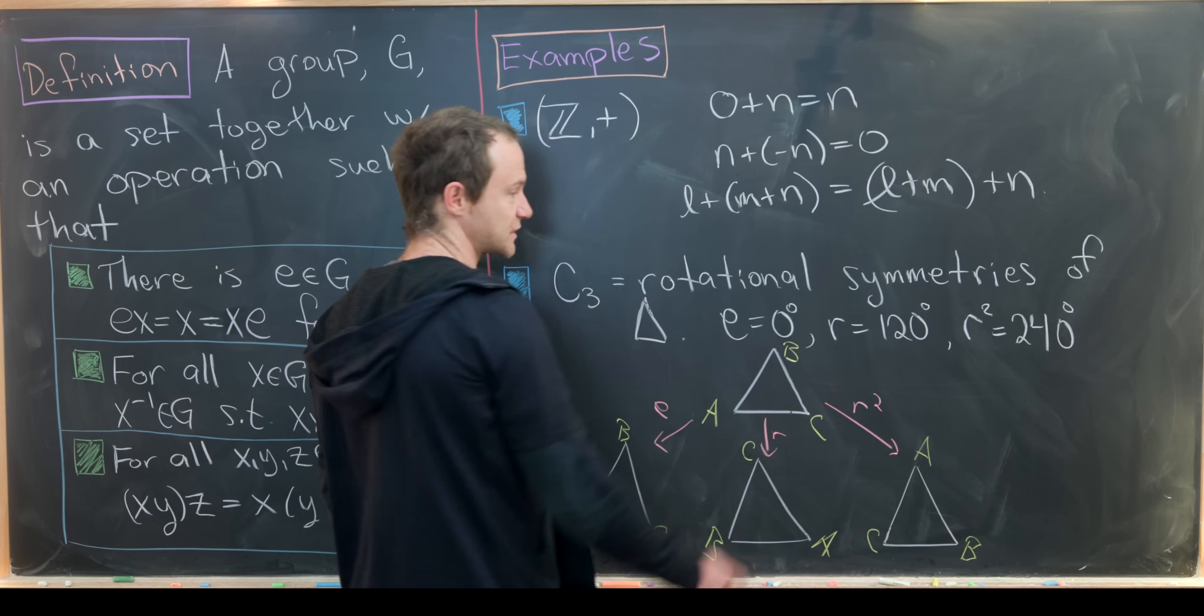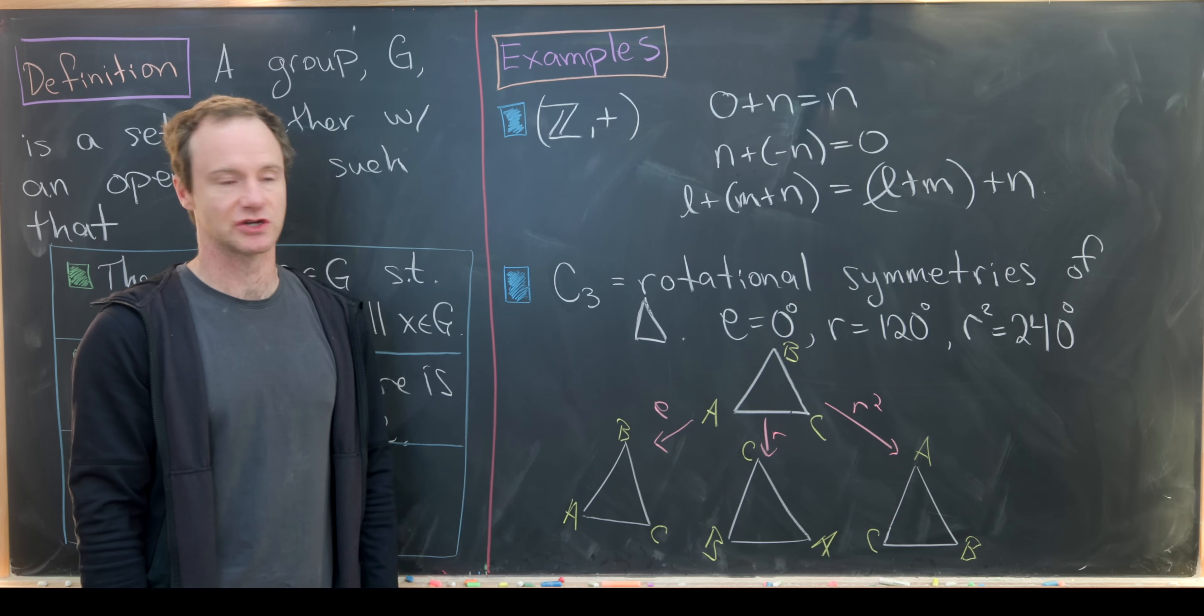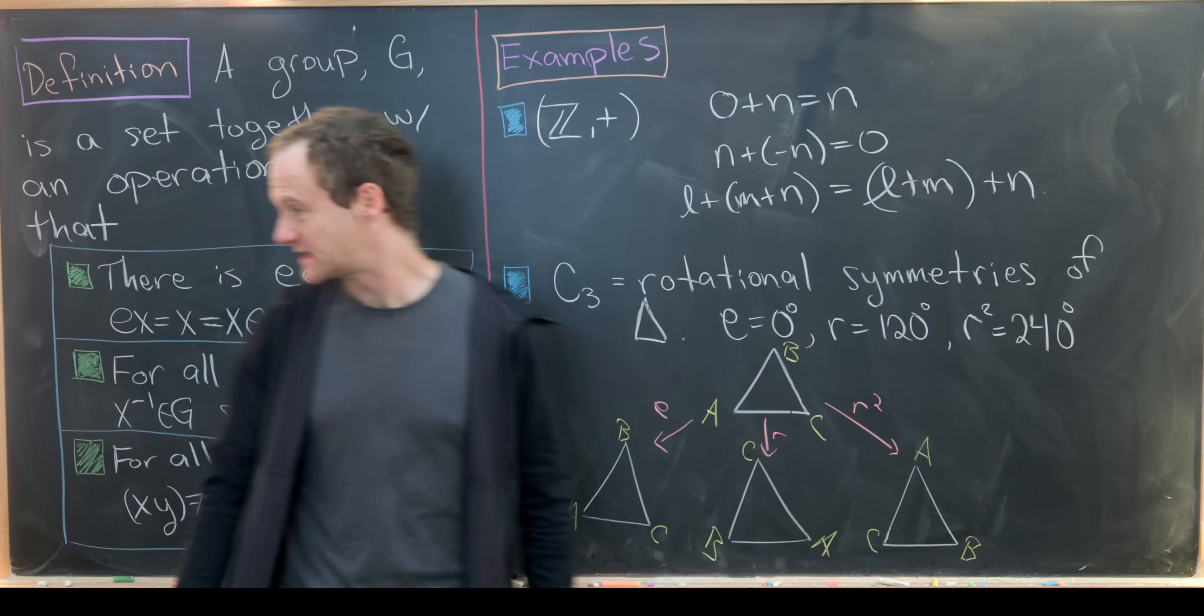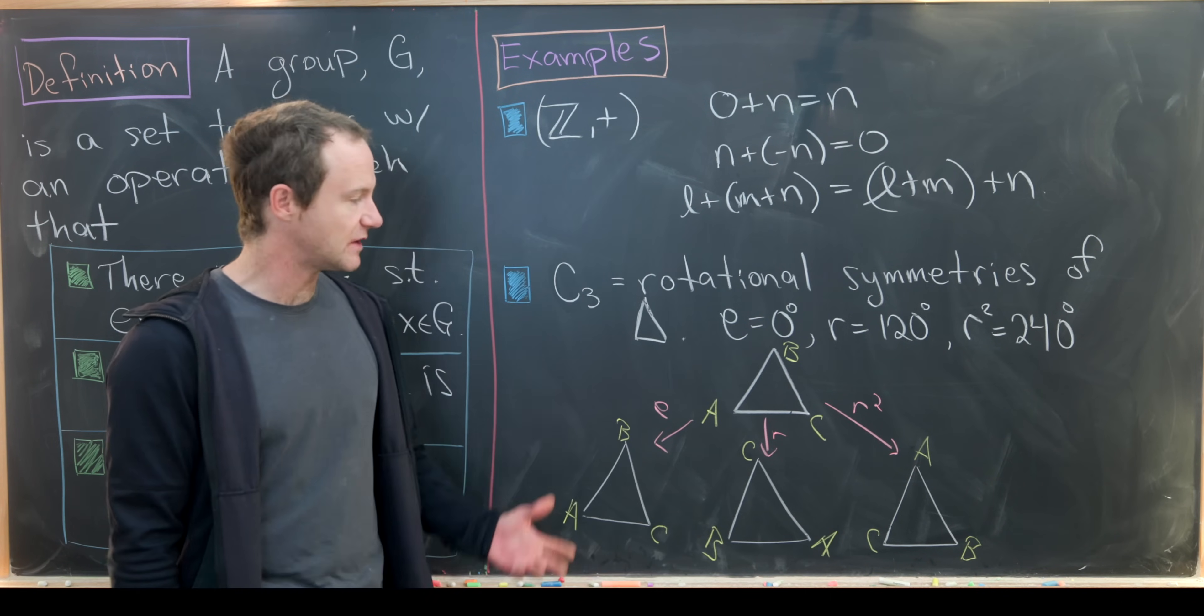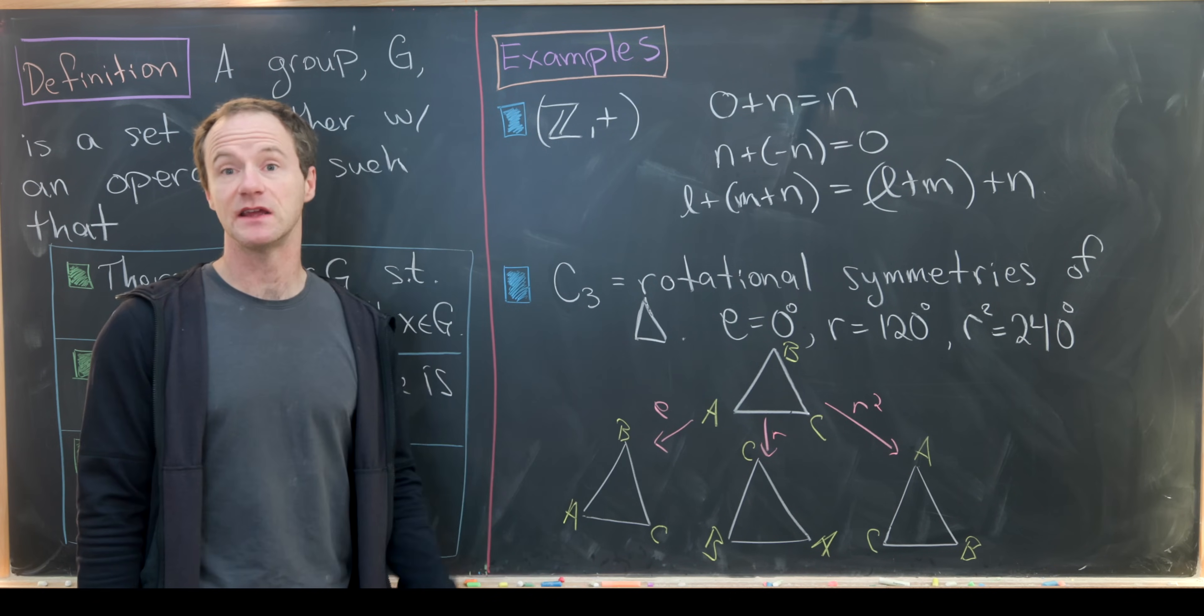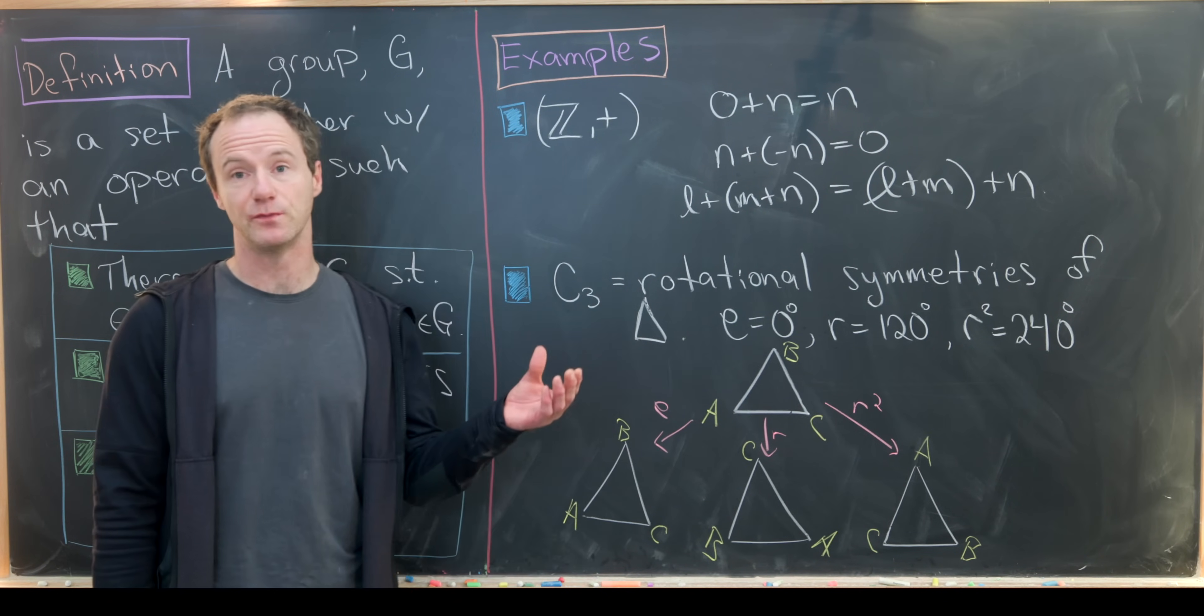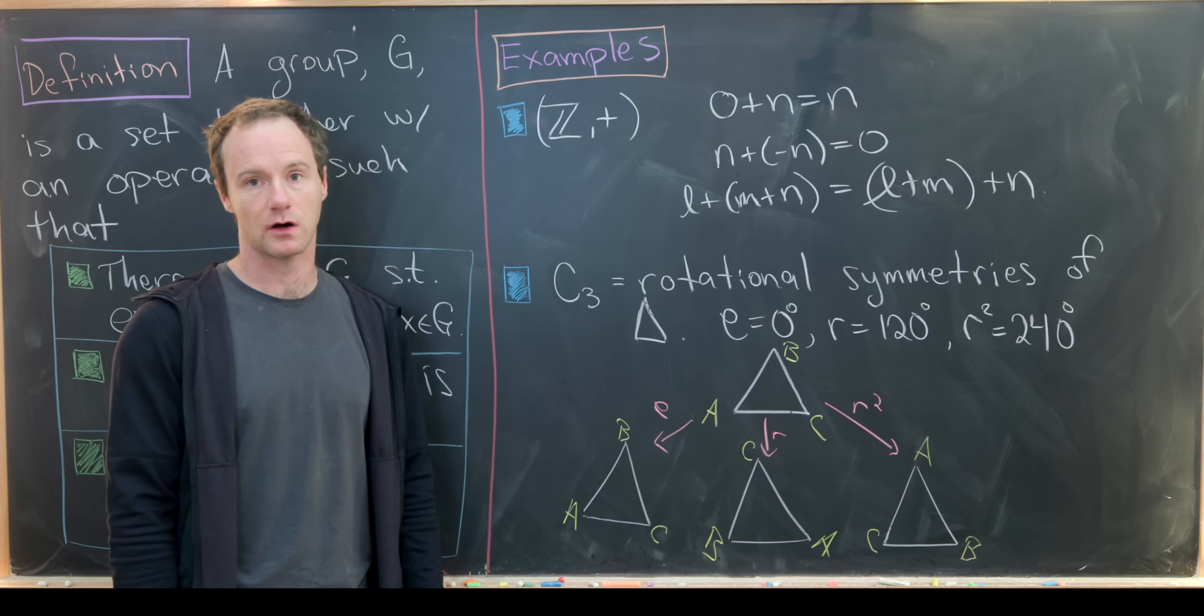And then if we apply R squared, which is two copies of the 120 degree rotation, we get A as this vertex, and then B, and then C. So you might say, what about things like an identity and inverses and associativity? Well, we won't check associativity, but notice this guy is most definitely the identity, the zero degree rotation. And then these two are inverses of each other, because if you put them together, you get a 360 degree rotation, which is like doing nothing at all.